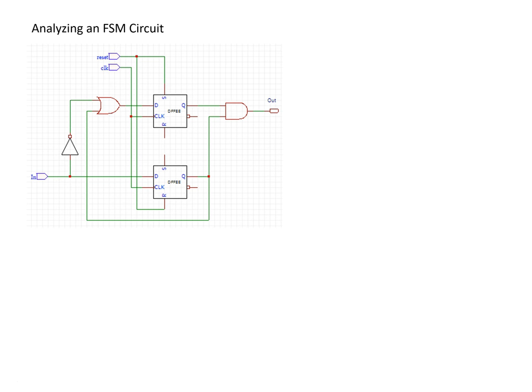Looking at this circuit, the first thing we might do would be to figure out logic equations for the output as well as for the next state. I'm going to arbitrarily label the top bit as the zeroth bit of the state and the second bit as the first bit of the state. From here I can say that the output — we have a single output — is just the combination of S1 AND S0.